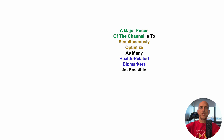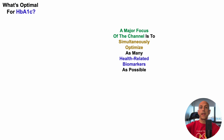A major focus of the channel is to simultaneously optimize as many health-related biomarkers as possible. So with that in mind, in today's video, what's optimal for HbA1c, otherwise known as glycated hemoglobin? To address that, we'll take a look at two studies.